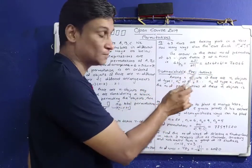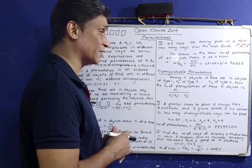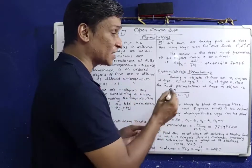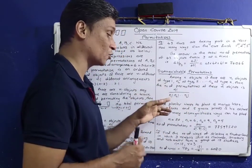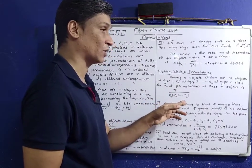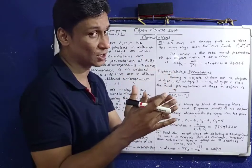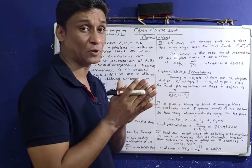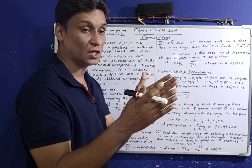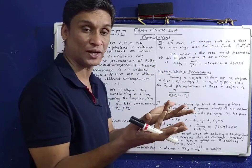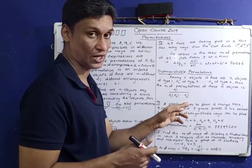Now let's get the other term: distinguishable permutations. Among n objects, if there are n1 objects of type 1, n2 objects of type 2, and so on up to nk objects of type k, then the total number of permutations is n factorial divided by n1 factorial into n2 factorial into ... into nk factorial.